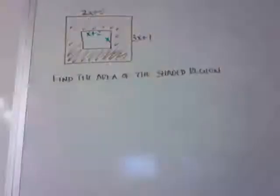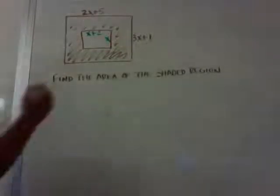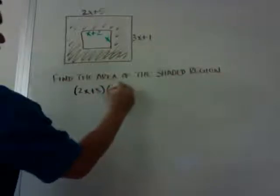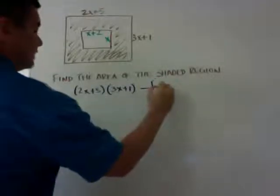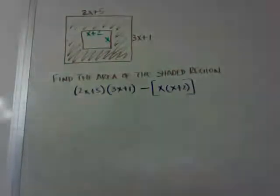So here's a word problem, or not a word problem, a picture problem that you're going to get in the book. And it's saying, find the area of the shaded region. So I want to find the area of this, kind of like a donut, a square donut. So what I need to do is find the area of the outside and then minus the area of the inside. So the area of the outside would be 2x plus 5 times 3x plus 1. And then I'm going to minus this area, which is x times x plus 2. And notice I put parentheses around that because I want to minus the whole thing.